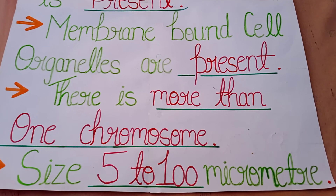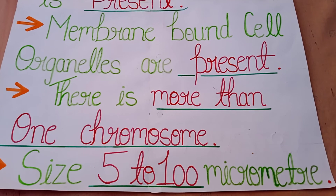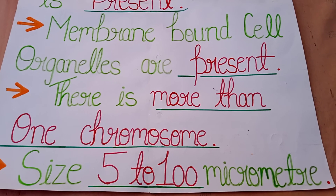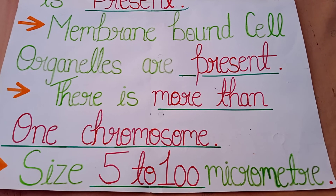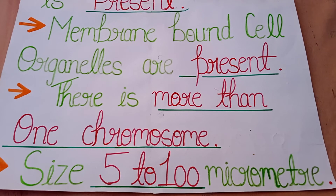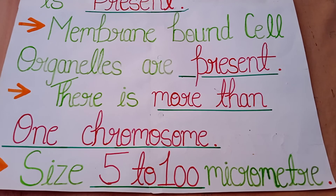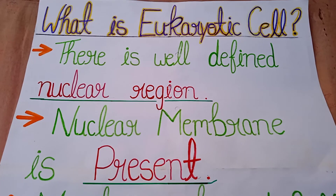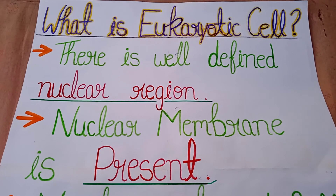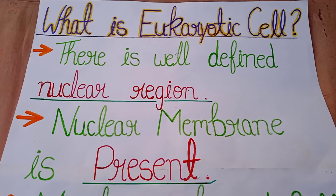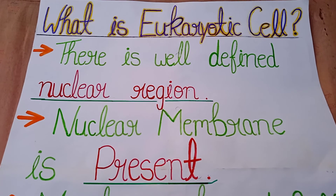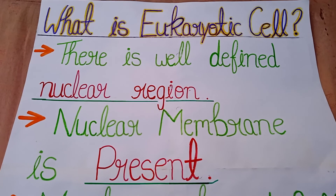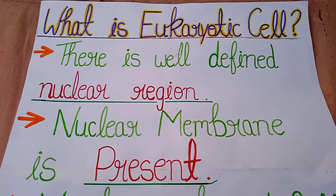The next and last point is size: 5 to 100 micrometers. Eukaryotic cell ki size 5 to 100 micrometer hoti hai. Thank you so much — if you liked it, please like my video, share it, and subscribe to my channel.